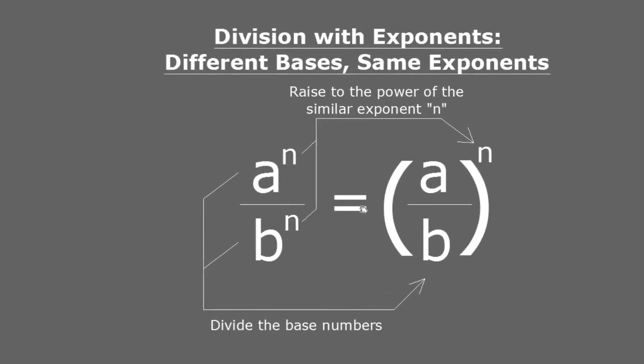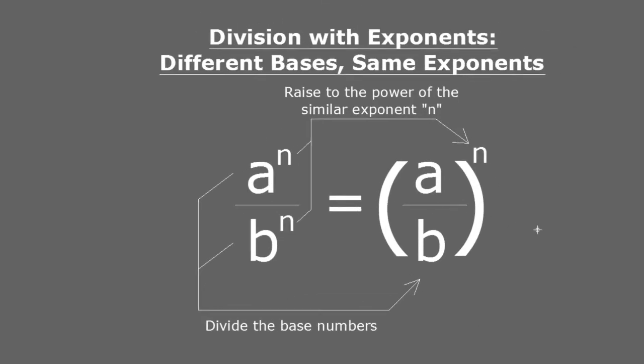Just remember, if you're having a division with the base numbers being different, but the same exponent, you can first divide the base numbers, and to that result, you can apply the exponent that was shared by the two base numbers which were different in the division.